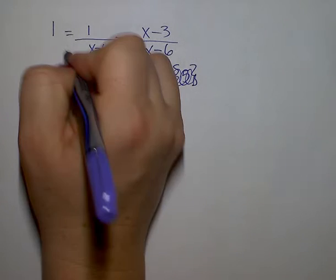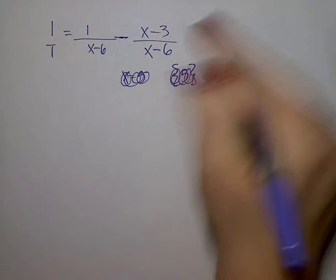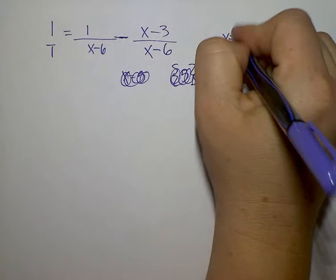Okay, so my common denominator, I want an x minus 6, so I know that the excluded value is positive 6.